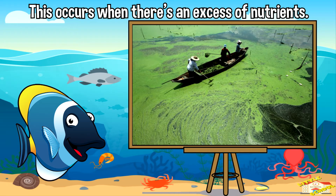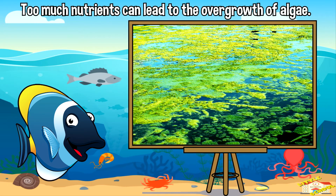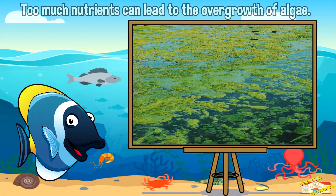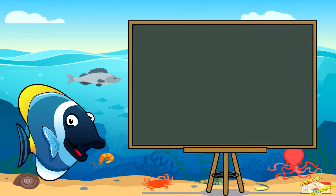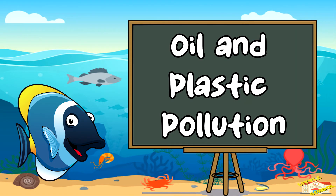Nutrient pollution: this occurs when there's an excess of nutrients, often from fertilizers, entering the water. While nutrients are essential for plant growth, too much of them can lead to the overgrowth of algae and other aquatic plants. When these plants die, they decompose and use up oxygen, creating dead zones where other aquatic life struggles to survive.